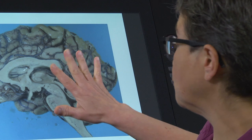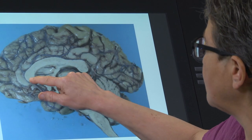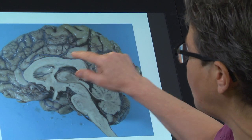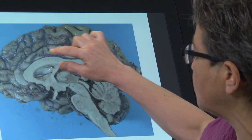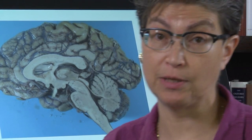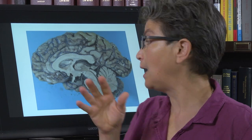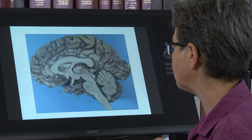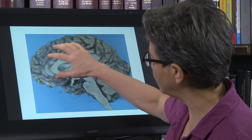Auditory cortex is not present here on the medial surface. You can see the corpus callosum, and the gyrus that runs just along the outside of the corpus callosum is the cingulate gyrus, which we talked about as being part of the limbic system and as being very important in learning, memory, and affect regulation.